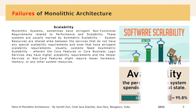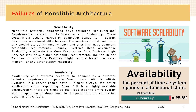Availability of a system needs to be thought of as a different technical requirement from others. With monolithic systems, if a server comes down, almost always the entire application stops responding. Even if it is a highly available configuration, there are times at peak load that the entire system stops responding or slows down to the point that the application becomes unavailable.